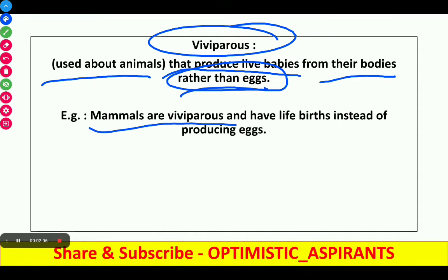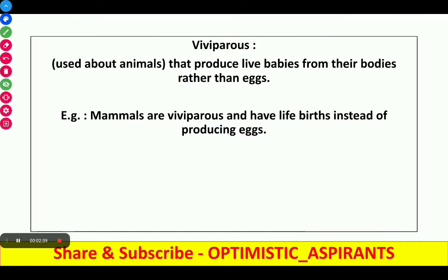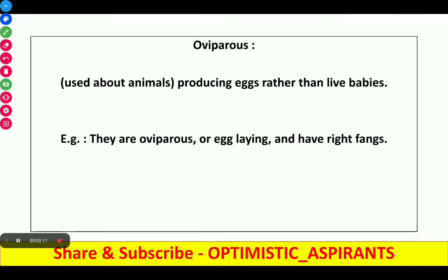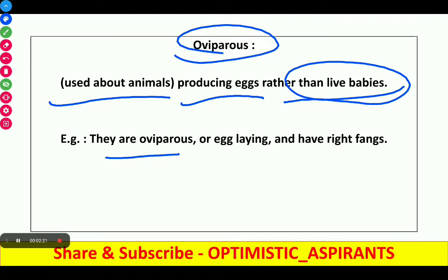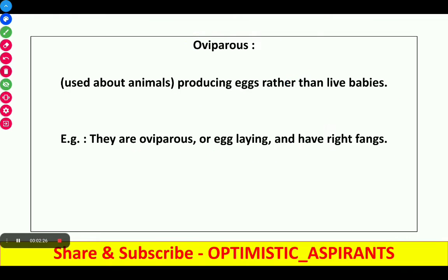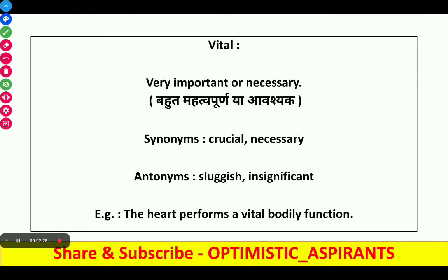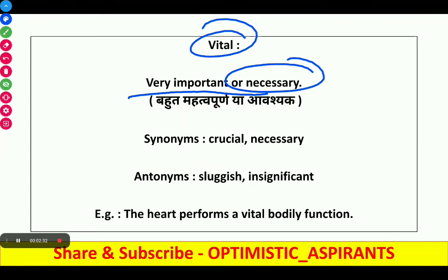Next word is viviparous. It is used about animals that produce live babies from their bodies rather than eggs. Example: 'Mammals are viviparous and have live births instead of producing eggs.' Next word is oviparous. It means producing eggs rather than live babies. Example: 'They are oviparous and may lay eggs and have rigid fangs.'